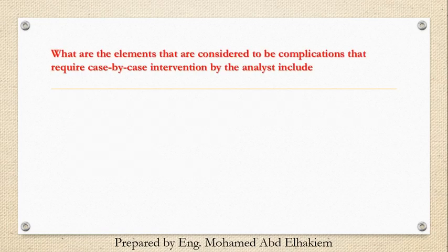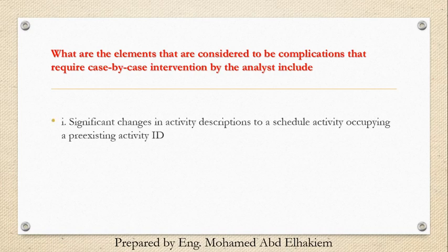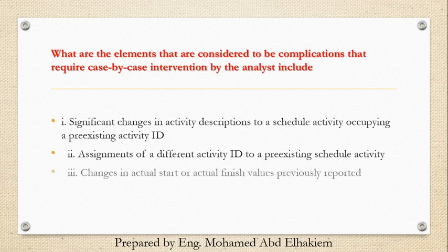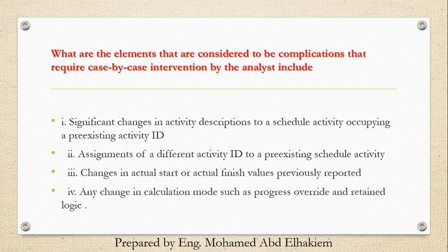What are the elements considered to be complications that require case-by-case intervention by the analyst? Significant changes in activity descriptions to a schedule activity occupying a pre-existing activity ID. Assignments of a different activity ID to a pre-existing schedule activity. Changes in actual start or actual finish values previously reported. Any change in calculation mode, such as progress override and retain logic.